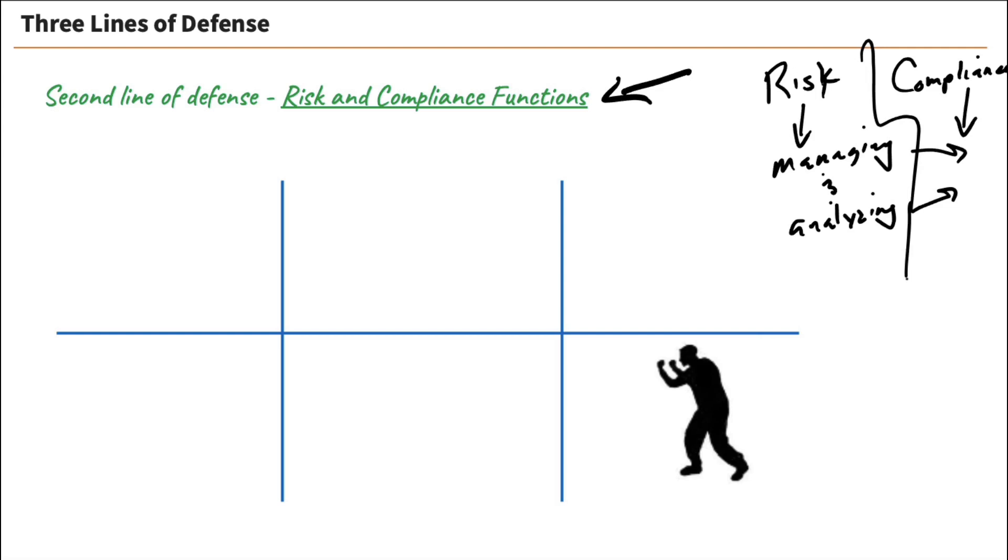The second line of defense is there to actually prop up the first line of defense to help them out and give them what they need. Some of the functions of our second line of defense come out to be providing oversight. This is like independent oversight of the first line of defense, which was the business unit managers and their employees. What is oversight? It's keeping an eye on things, talking with people, going out, seeing how things are going.